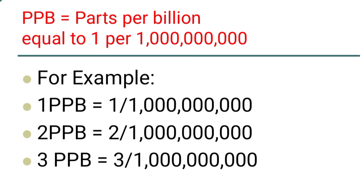For example, 1 ppb is equal to 1 upon 1 billion. 2 ppb is equal to 2 upon 1 billion. In the same way, 3 ppb is equal to 3 upon 1 billion.